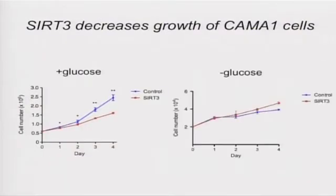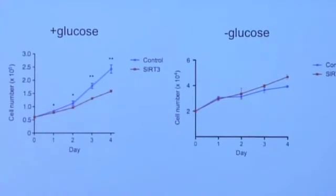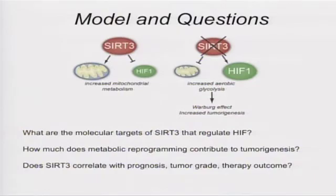Does SIRT3 affect the growth of breast cancer cells? In CAMA1 cells, SIRT3 overexpression represses growth in a glucose-dependent manner. Interestingly, in CAMA1 cells in the absence of glucose, SIRT3 overexpression cells actually grow a little bit faster. We've identified a novel regulation by which SIRT3 controls metabolism outside of its direct role as a mitochondrial deacetylase: SIRT3 regulates ROS levels, and that ROS acts as a signal to regulate HIF1-alpha stability, thereby helping a cell decide whether to boost mitochondrial or glycolytic metabolism.